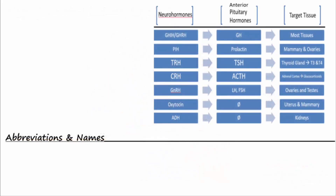Technically, the hormones from the hypothalamus are called neurohormones because they are released into the blood from the terminal ends of CNS neurons.